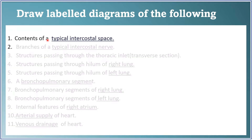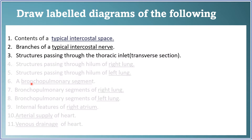Now we will look at labeled diagram questions. First: contents of a typical intercostal space — draw showing the intercostal muscles, nerve, and arteries. Second: branches of a typical intercostal nerve — draw the diagram showing its course and branches. Third: structures passing through the thoracic inlet (which clinicians call thoracic outlet).